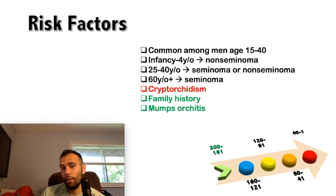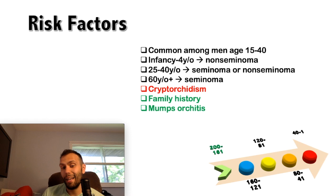The biggest high-yield risk factor for testicular cancer is cryptorchidism—when one or both testes fail to descend. Family history is also particularly important. Mumps orchitis can predispose due to dysregulation of genetic factors from inflammation and viral damage early in life. Less high-yield risk factors include Klinefelter syndrome and a history of inguinal hernia.